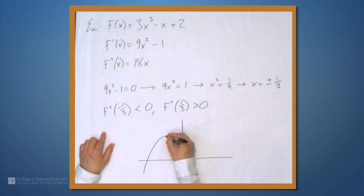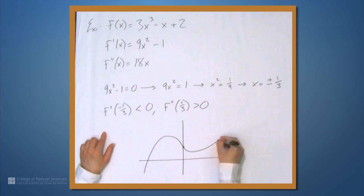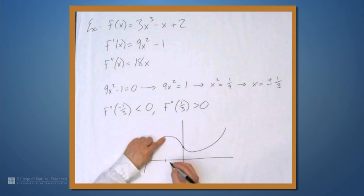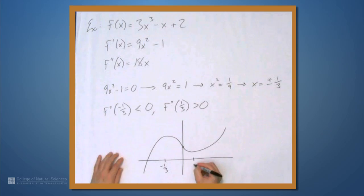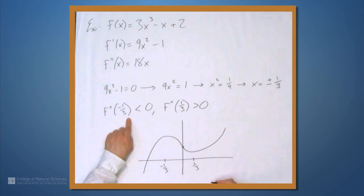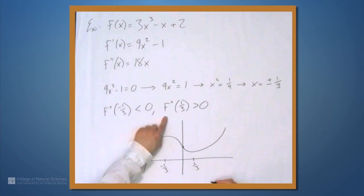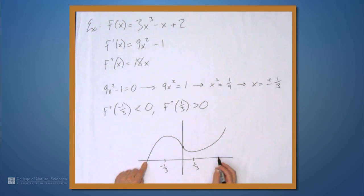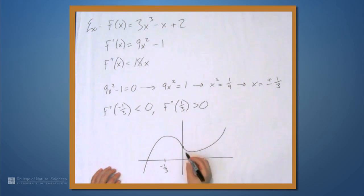Let's start to sketch the graph. To fix a value, let's figure out f(0) — that makes the first two terms disappear, giving f(0) = 2. That's the y-intercept. The local max is at x = -1/3 and the local min is at x = 1/3. Local max corresponds to f'' being less than 0, and local min to f'' being greater than 0. We didn't get any x-intercepts, but what we're really looking for are the intervals of increasing and decreasing and the inflection points.